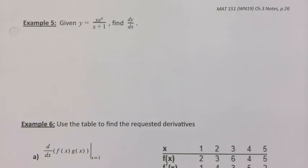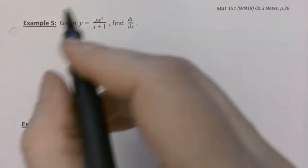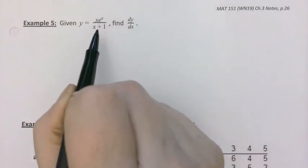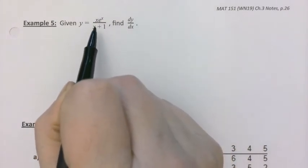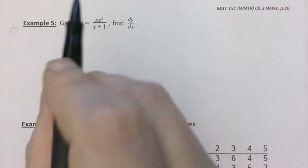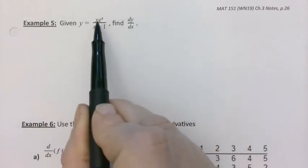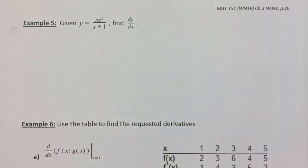Now that we've learned the product and quotient rules, wouldn't it be lovely to combine them together into one problem? And that's what we're going to do right here. I can see that I have division, so I'm definitely going to be using the quotient rule. But if I look at the numerator up there, I'm going to be using the product rule as well.